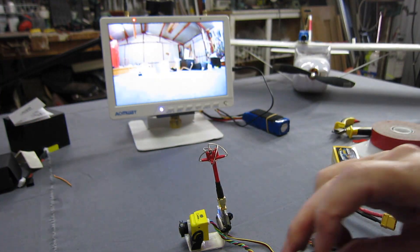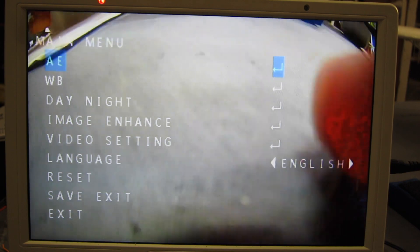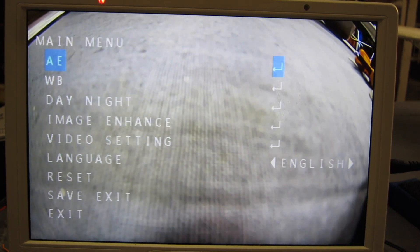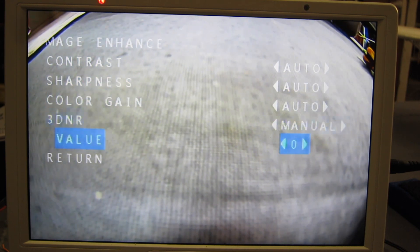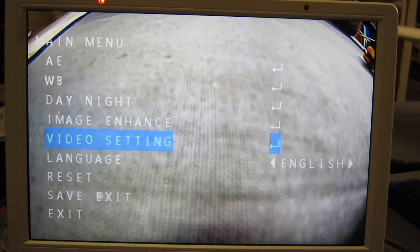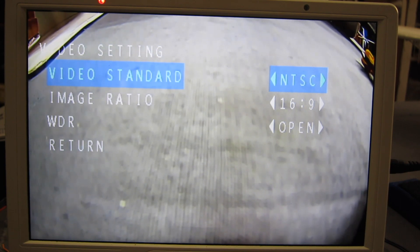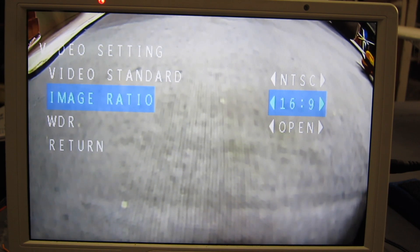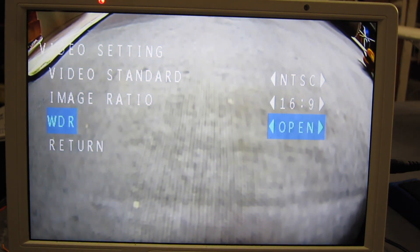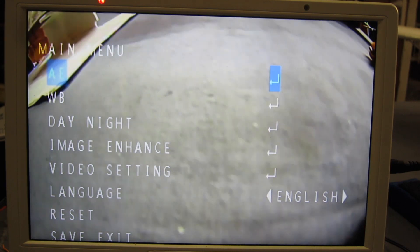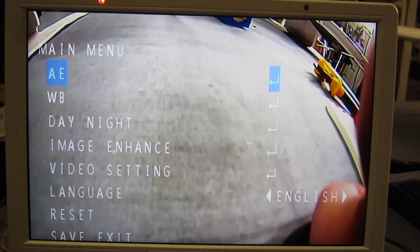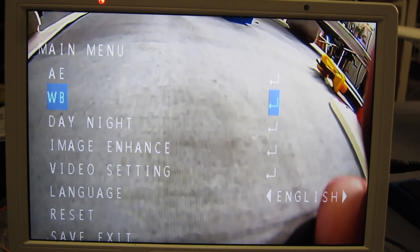Let's have a closer look at the Caddx camera now. If we push the button we'll bring up the menu. Auto exposure, white balance, day night image enhance. Let's have a look at what we've got there. Clear contrast, sharpness, colour gain, noise reduction and return. Video settings. Video standard or PAL. Go to video settings again. We've got NTSC or PAL. Image ratio. 16:9 or 4:3. Wide dynamic range. Let's see what the options are here. On or off basically. They're saying open or closed. And we'll leave it on. Return. Language reset. Save and exit. Alright. So that looks like about it with this camera. There's no actual flying on screen display. So nothing to set up there as far as I can see. Save and exit.